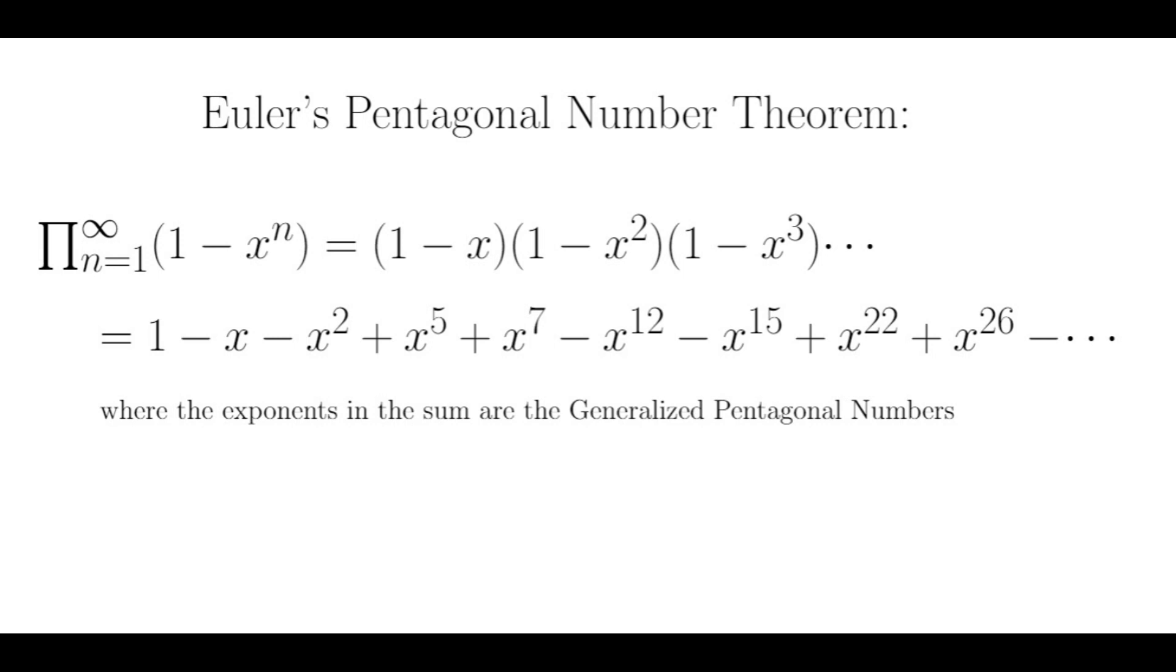What you see here is an identity that Euler proved in 1783, which shows that the infinite product of 1 minus increasing powers of x is equal to a special type of alternating sum of increasing powers of x, where the exponents are, in fact, the generalized pentagonal numbers.